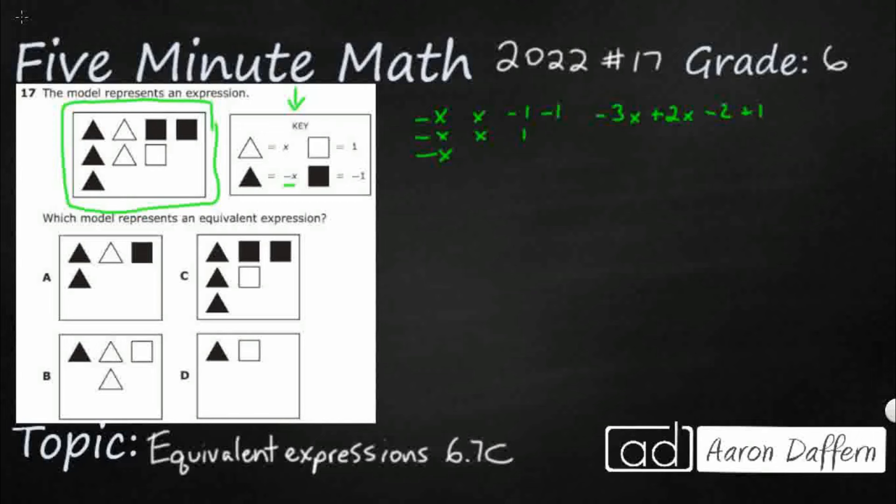But a negative x and a positive x cancel out. Same with a negative one and a positive one, right? One minus one is zero. So what am I left with? I'm left with negative x minus one. That's all I'm left with.